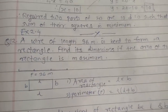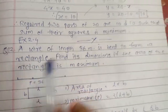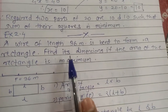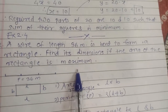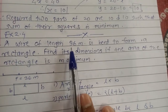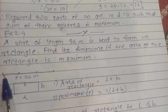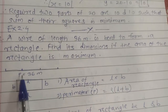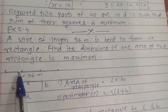Hello students, I'm going to continue with the chapter Applications of Derivatives, Exercise 2.4, question number 12. A wire of length 36 meters is bent to form a rectangle. Find its dimensions if the area of the rectangle is maximum. These examples are related to the maxima and minima concept. We divide the wire into four parts to form a rectangle.